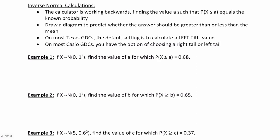Let's take a look at some examples. Example number one: if x is normally distributed — the first number is the mean and the second is the standard deviation — this is the standard normal distribution with a mean of 0 and a standard deviation of 1. Find the value of a for which the probability of x less than or equal to a is equal to 0.88.